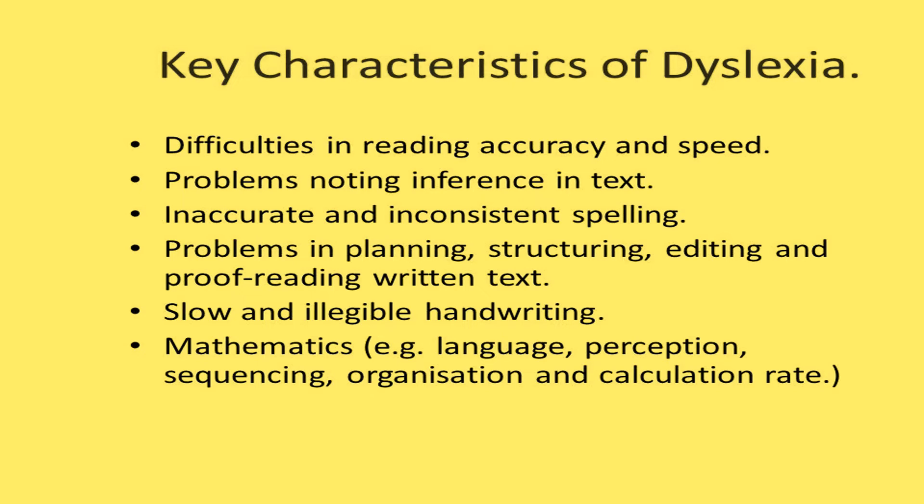These are the key characteristics of dyslexia, directly related to its forms and types. A child with dyslexia has difficulties in reading accurately and speedily, problems making inferences from text, inaccurate and inconsistent spelling, problems in planning, structuring, editing, and proofreading written text, slow and illegible handwriting, and difficulties in mathematics including language perception, sequencing, organizing, and calculation.